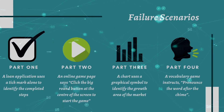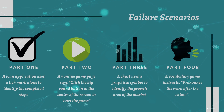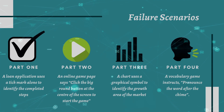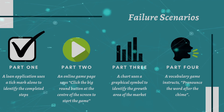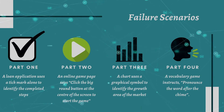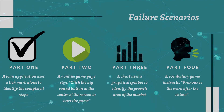Part 3: A chart uses a graphical symbol to identify the growth area of the market. Part 4: A vocabulary game instructs, pronounce the word after the chime.